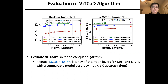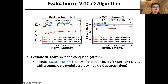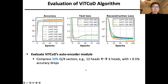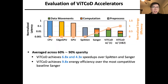We also provide ablation studies for both algorithm and hardware. For the algorithm, the split-and-conquer algorithm can help reduce 40% to 80% latency of attention layers with comparable model accuracy. For the autoencoder module, it can compress 50% of QK vectors with less than 0.5% accuracy drop. For the VIT-CoD accelerator, evaluated across 60% to 90% sparsity in the attention map, VIT-CoD achieves 7× and 4× speedup over Spartan and Sanger, and achieves 9× energy efficiency over the most competitive baseline, Sanger.